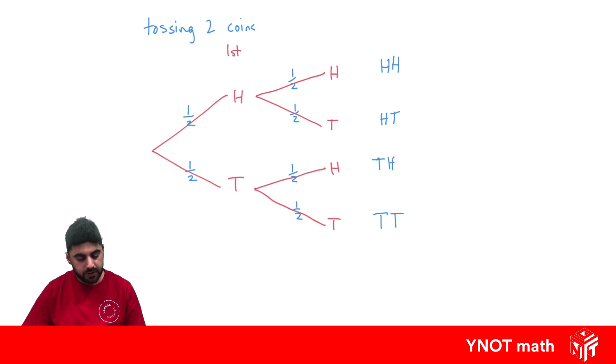When we move along the tree diagram this way, these are successive events. These are things happening one after the other. But all of these are compound events. They can't happen at the same time. They're all just a possibility of what can actually happen.